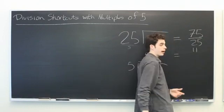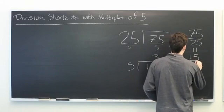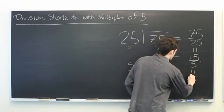Here, we're dividing both the top and the bottom by 5. We get 15 over 5, which is equal to 3.